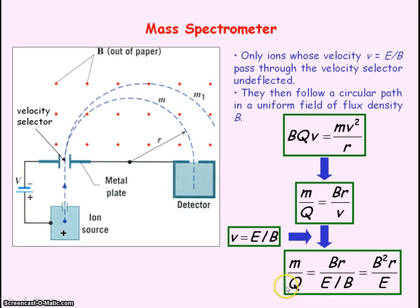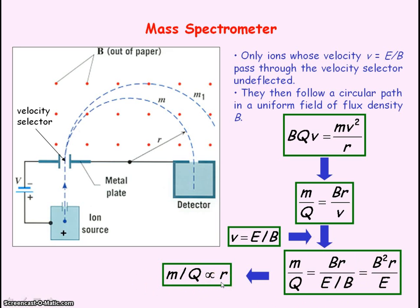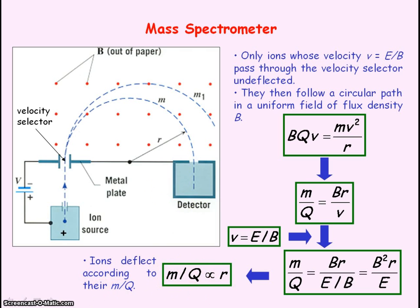So M divided by Q equals B squared R divided by E. As the magnetic flux density B and the electric field strength E are constants, we can say the mass per unit charge of our ion is directly proportional to the radius of the path it takes in the uniform magnetic field. So the ions deflect according to their mass per unit charge, and we can use the radius to identify what type of ions we have. The detector of the ions is moved along different radii to determine which ions are present, and they can also determine the current — the number of ions arriving per unit time — which will indicate the abundance of the ions.